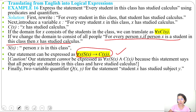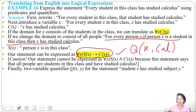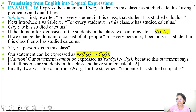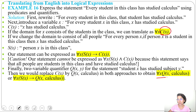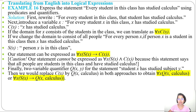We can also use two variables. Let Q(x, y) mean 'student x has studied subject y.' Then Q(x, calculus) means student x has studied calculus. When the domain is the set of students in the class, we replace C(x) with Q(x, calculus), giving: for all x, Q(x, calculus). When the domain is all people, it becomes: for all x, S(x) implies Q(x, calculus).